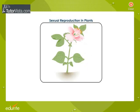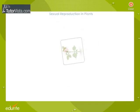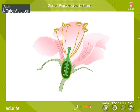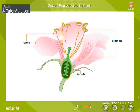Sexual reproduction in plants. The flower is the reproductive organ of a plant. Let's get familiar with the parts of a flower. Here is a section of a typical flower. The flower contains four basic parts: the leaf-like sepals, the attractively coloured petals, the stamens and a pistil.